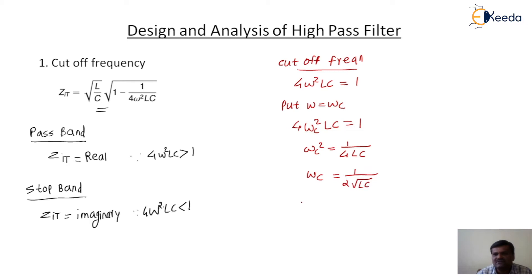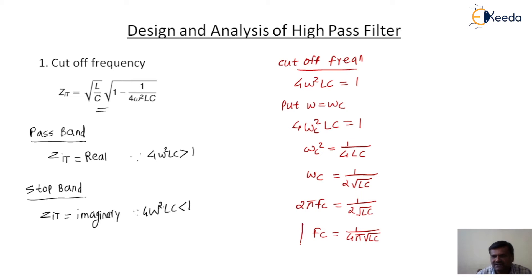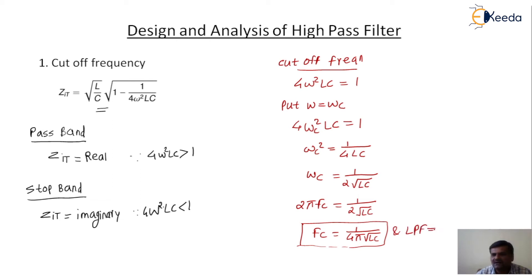We know ωc equals 2πfc, so fc equals 1 upon 4π root(LC). This is the cutoff frequency for the high-pass filter. We can see the difference between the low-pass filter and high-pass filter cutoff frequency formulas. For the high-pass filter, fc equals 1 upon 4π root(LC), and for the low-pass filter, fc equals 1 upon π root(LC). The only difference is a factor of 4.